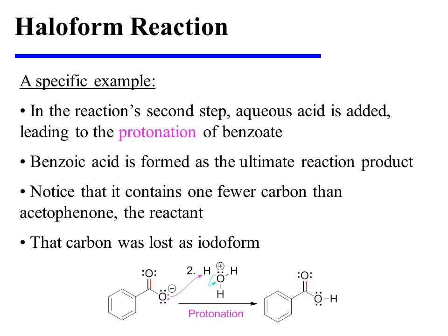In the reaction's second step, aqueous acid is added, leading to the protonation of benzoate. Benzoic acid is therefore formed as the ultimate reaction product. Notice that it contains one fewer carbon than acetophenone, which was the reactant, and that carbon was lost as iodoform.